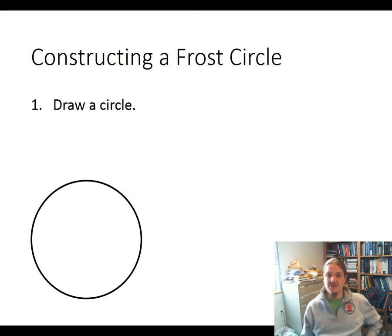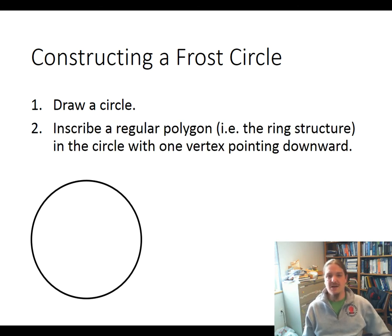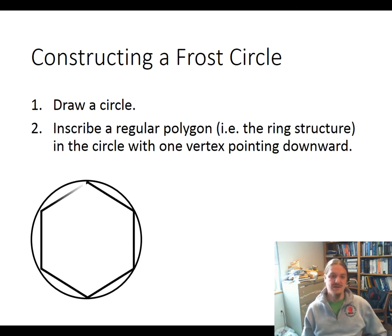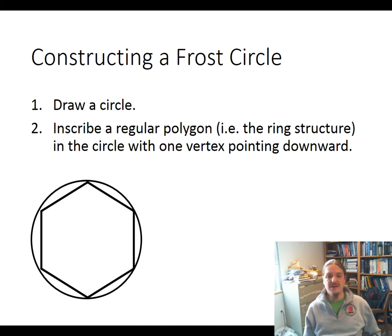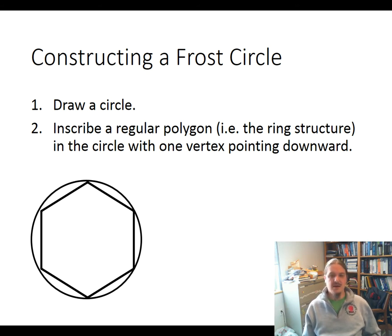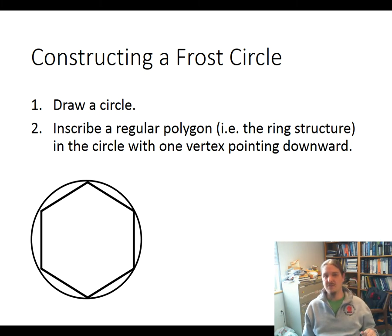You start by drawing a circle and then inscribing a regular polygon — the ring structure itself — within the circle. So if we're doing benzene, we draw a hexagon in that circle. Inscribe means that the vertices of the hexagon need to touch the circle, and it's important that one of the vertices points downward for this to work. We don't want to inscribe the hexagon so that one of the edges is pointing downward.